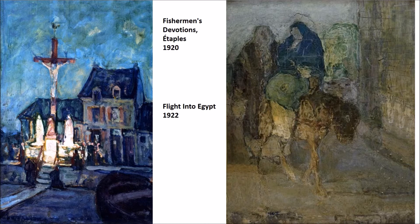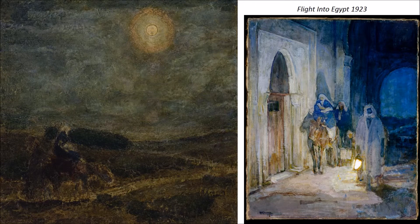As we approach the end of his career, he's still maintaining religious themes but becoming more and more abstract. Flight into Egypt from 1922 is a prime example — he's reduced the figures down to colors where we can still identify Mary by her blue, and we assume the other figure to be Joseph.